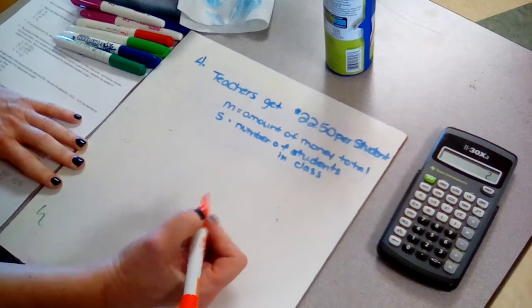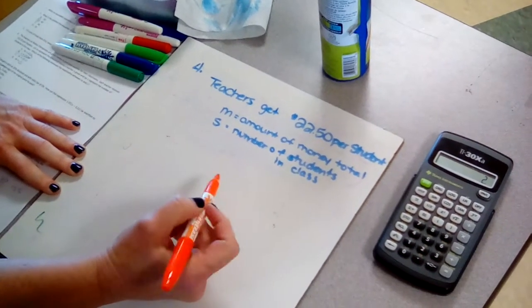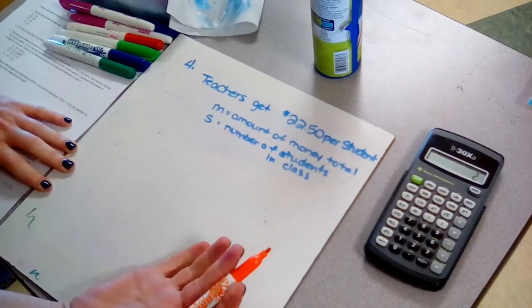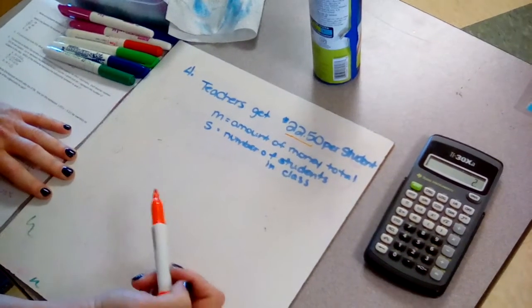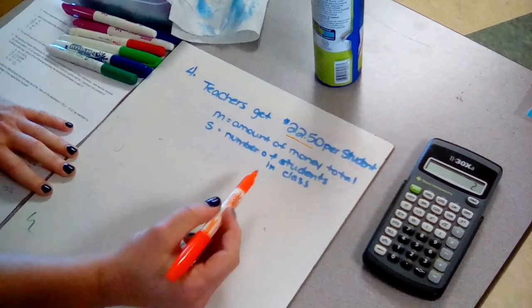So I find that the easiest way to think about this is if I had five students in my class and I get this much per student, how would I figure out how much I had total? I would have to multiply them.